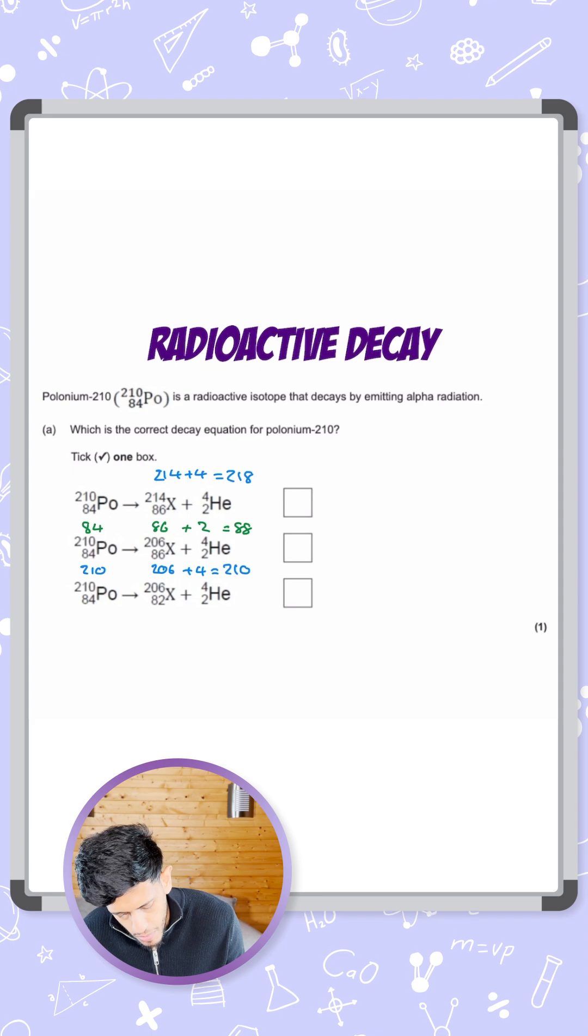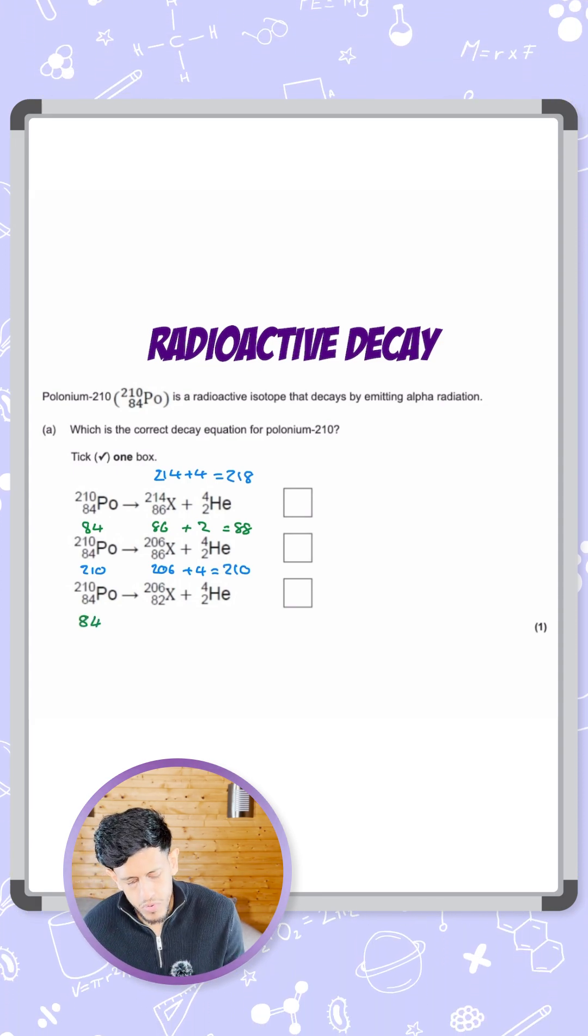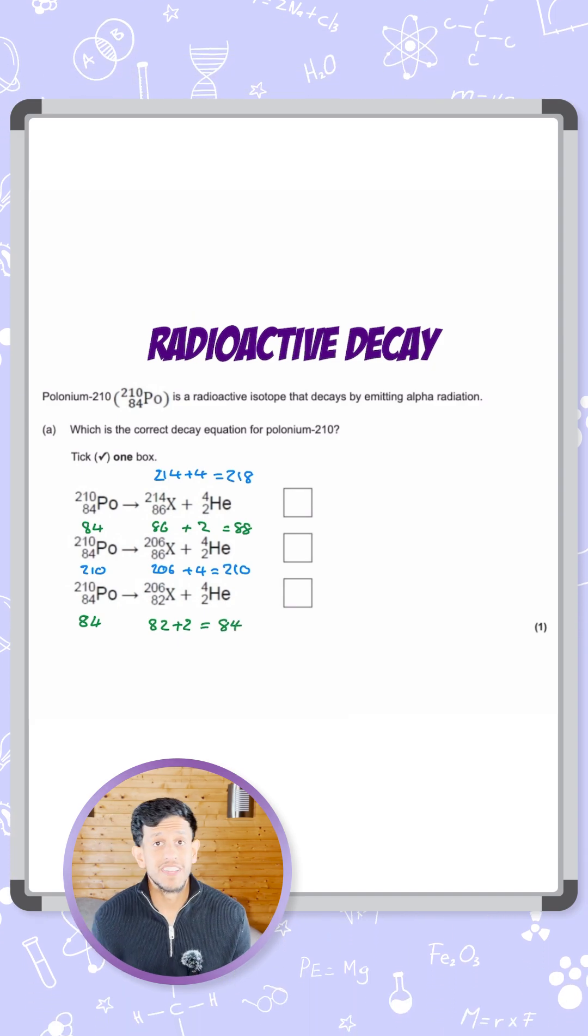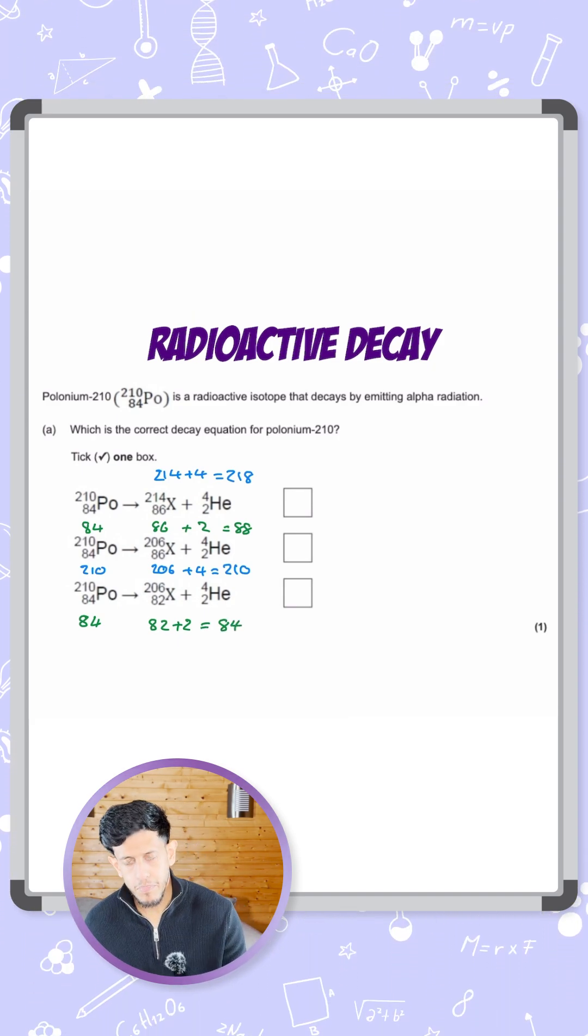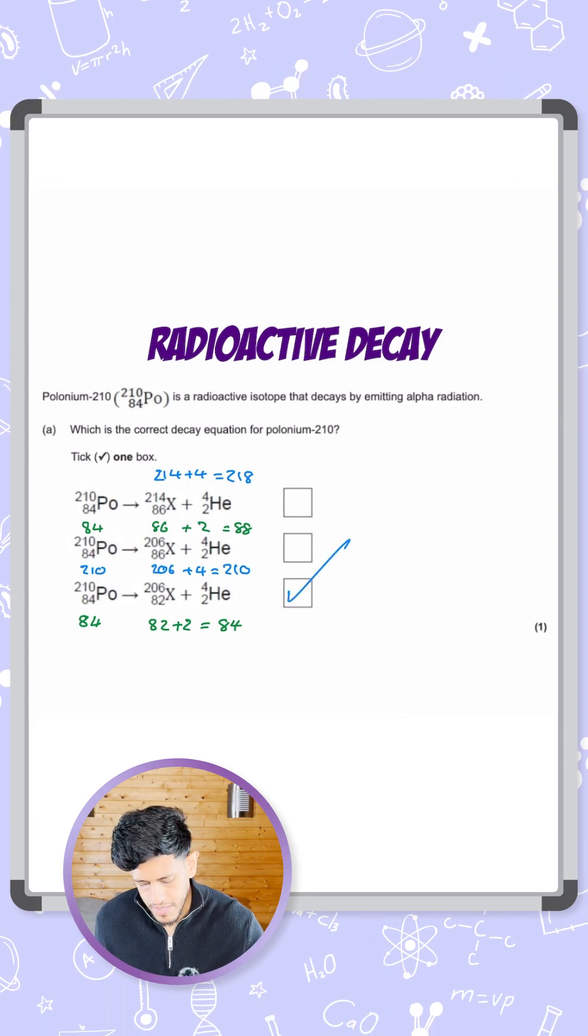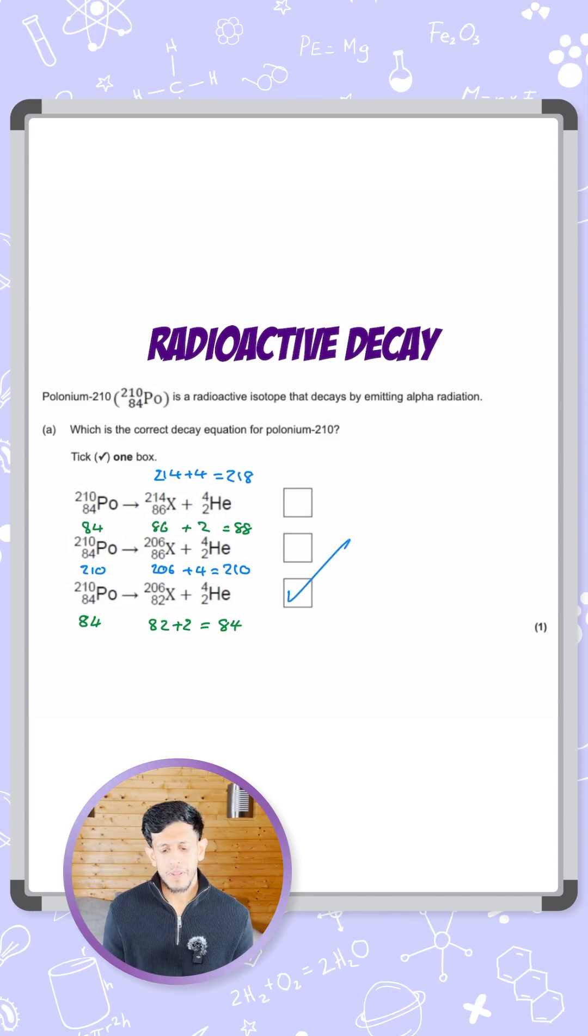So we're just going to do it for completion—we've gone by elimination—but let's have a look. 84 here for polonium on the left, and on the right-hand side we have 82 plus 2 for the atomic number, a total of 84. That balances both the mass number and the atomic number balance. So our correct answer is the third answer here: 206, 82 for element X.